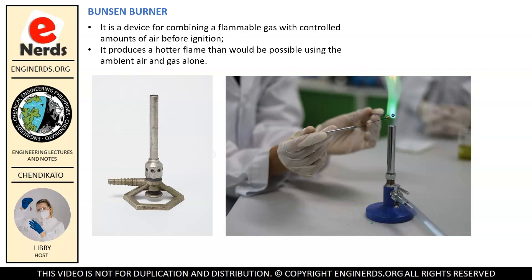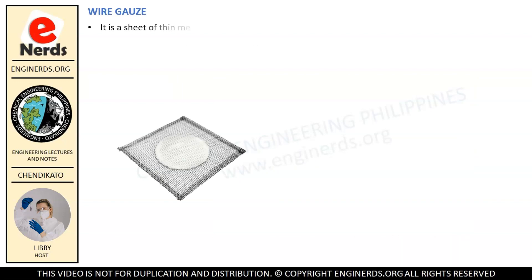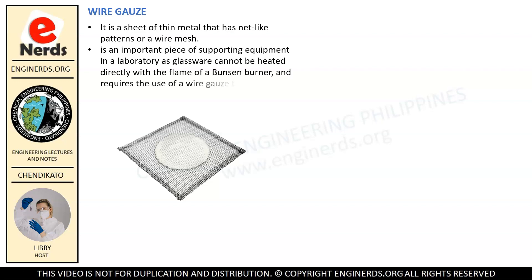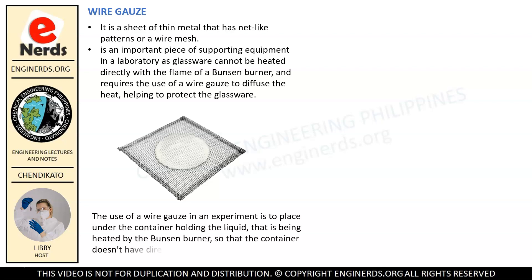Next we have the wire gauze. It is a sheet of thin metal that has net-like patterns, or a wire mesh. It is an important piece of supporting equipment in a laboratory, as glassware cannot be heated directly with the flame of a Bunsen burner and requires the use of a wire gauze to diffuse the heat, helping to protect the glassware. The wire gauze is placed under the container holding the liquid being heated so the container does not have direct contact with the flame.